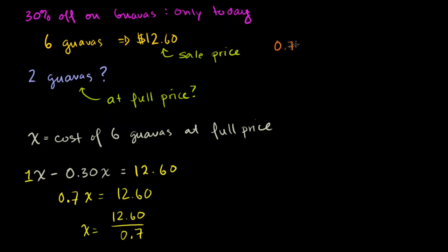So we get 0.7 goes into 12.60. Let's multiply both of these numbers by 10, which is what we do when we move both of their decimals one to the right. So the 0.7 becomes a 7. The 12.60 becomes 126. Put the decimal right there.